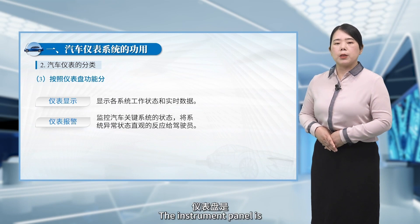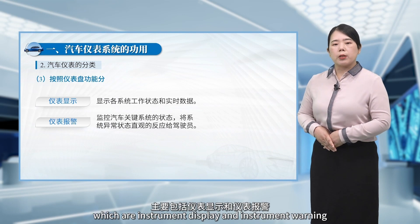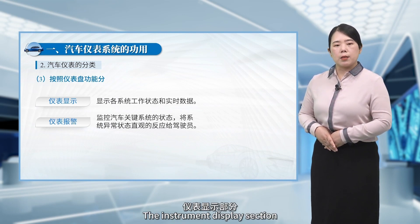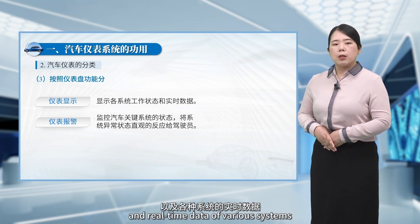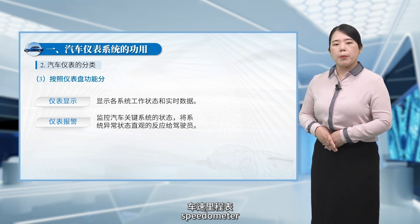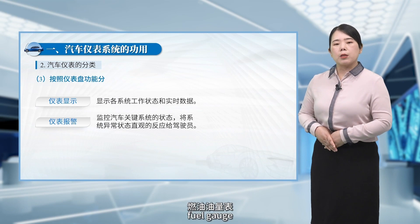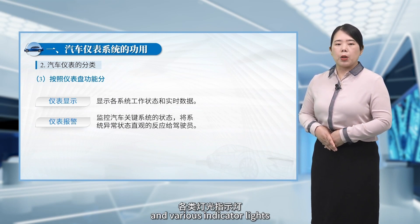The instrument panel is divided into two main parts based on functionality, which are instrument display and instrument warning. The instrument display section primarily shows the working status and real-time data of various systems. It includes the tachometer, speedometer, gear position indicator, fuel gauge, water temperature gauge, and various indicator lights.